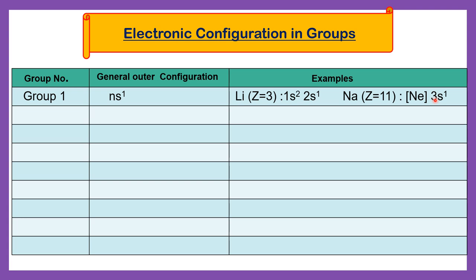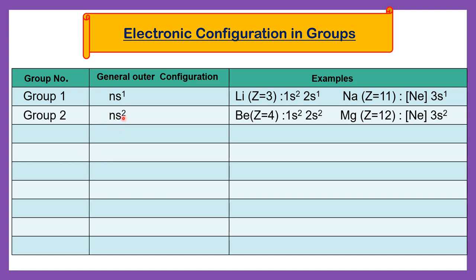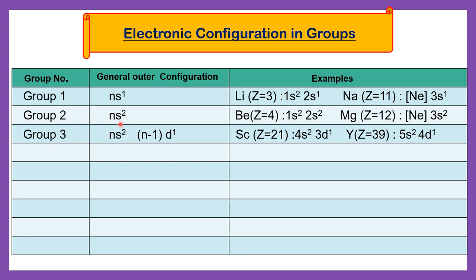Group number 2 has general outer electronic configuration ns2 — s subshell having two electrons. Example: beryllium (atomic number 4) has outer electronic configuration 2s2. Another example: magnesium (atomic number 12) has outer electronic configuration 3s2. The difference is only in the shell number — 2s2 versus 3s2 — because as we move down the group, a new shell is entered. The general outer electronic configuration remains the same.